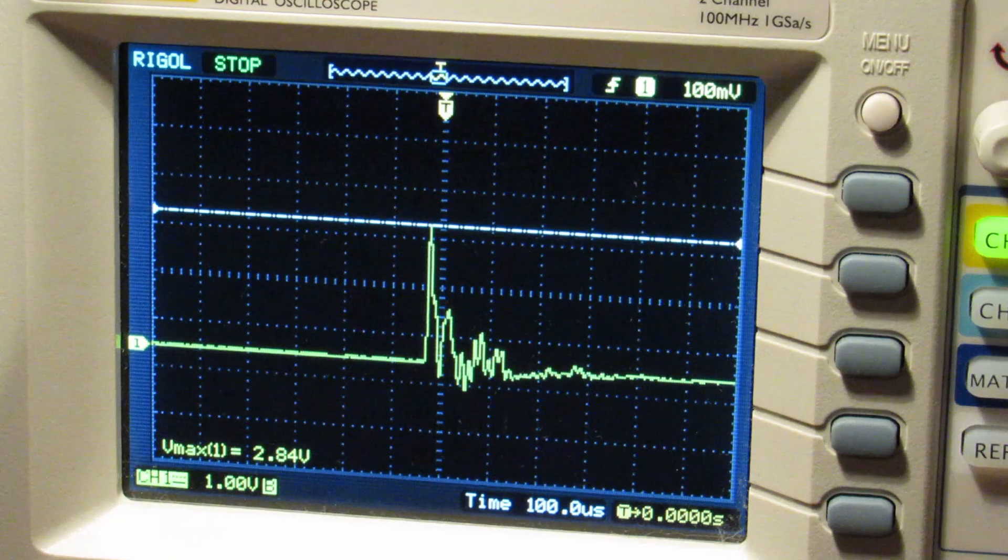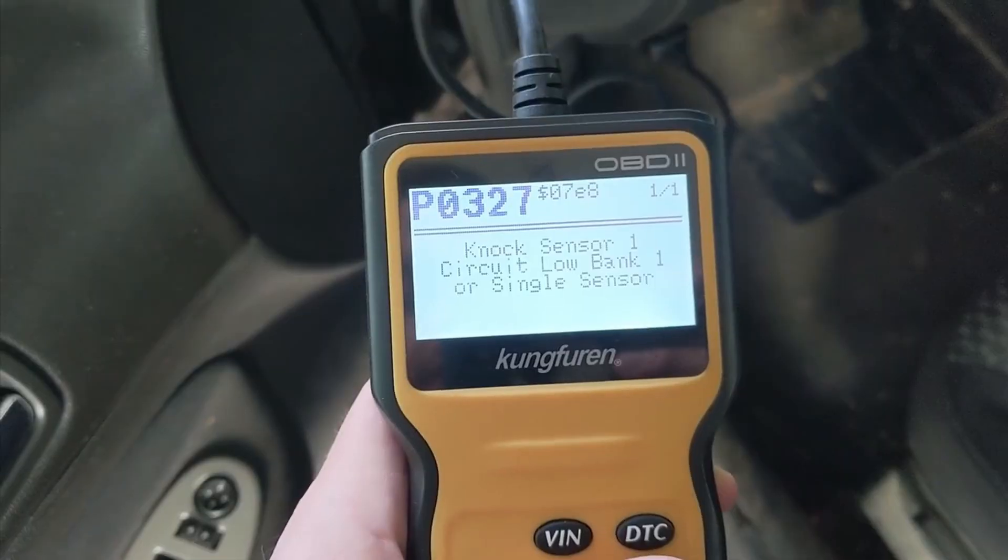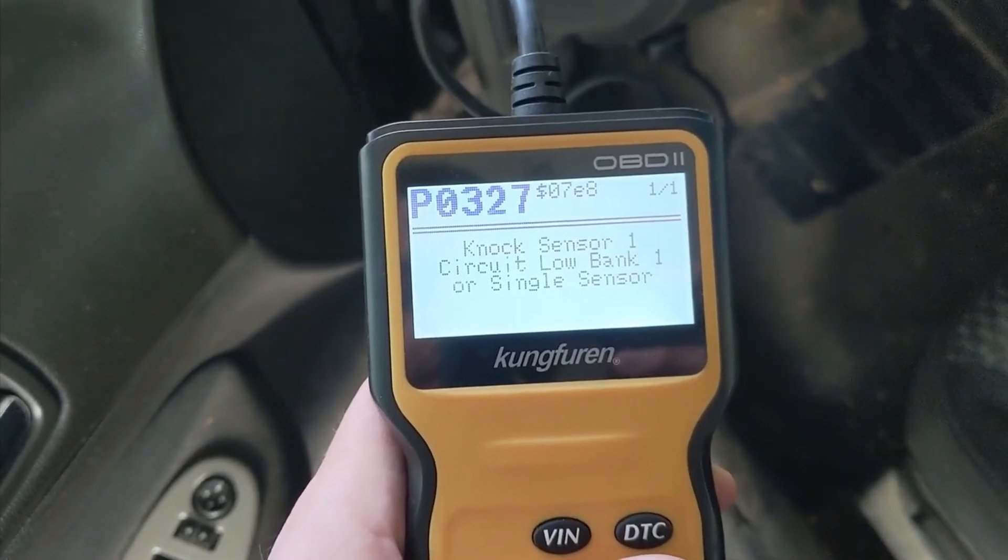Voltage from the knock sensor lets the engine control module know that a knock has occurred and to display a check engine light.